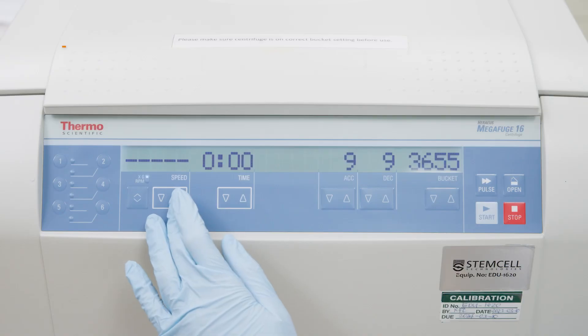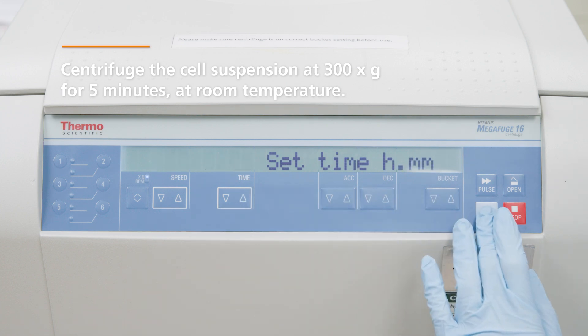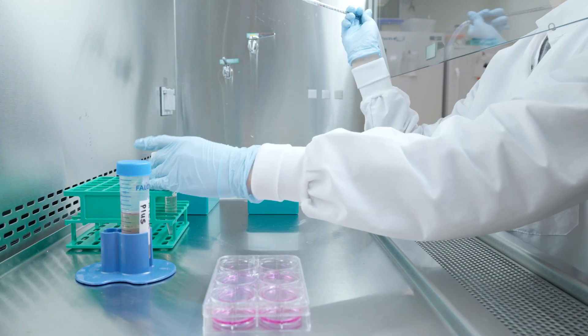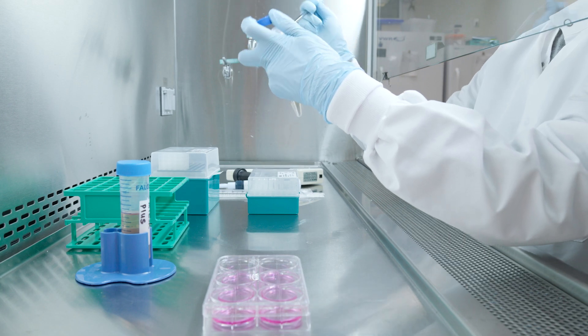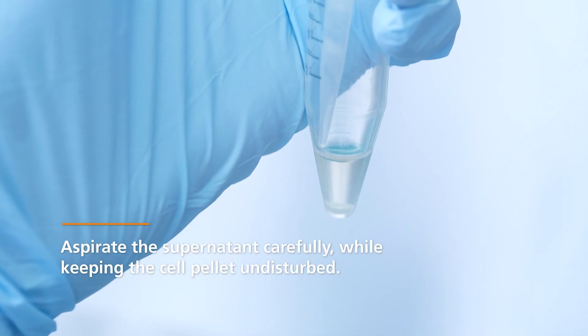Centrifuge the cell suspension at 300 g for 5 minutes at room temperature. Remove the tube from the centrifuge, then aspirate the supernatant carefully, leaving some media behind while keeping the cell pellet undisturbed.